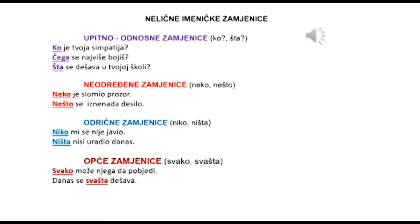U nelične imeničke zamjenice spadaju upitno-odnosne zamjenice ko i šta. Na primjer: ko je tvoja simpatija? Čega se najviše bojiš? Šta se dešava u tvojoj školi? Druga vrsta neličnih imeničkih zamjenica su neodređene zamjenice: neko i nešto. Neko je za bića, nešto za stvari. Na primjer: neko je slomio prozor; nešto se iznenada desilo.